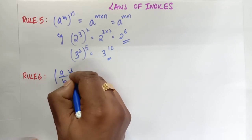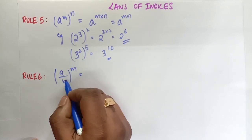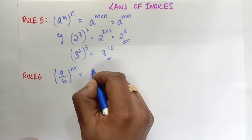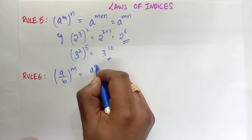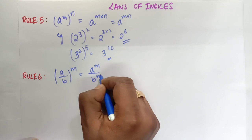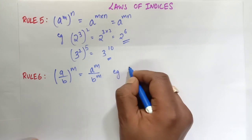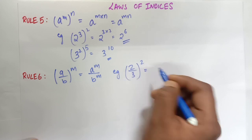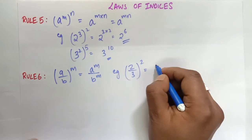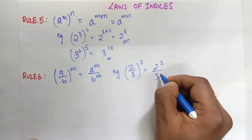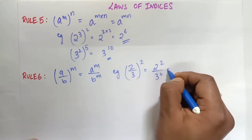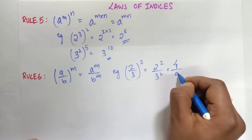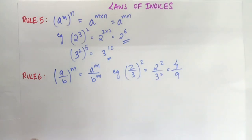Rule number 6: (a over b) to the power m equals a to the power m divided by b to the power m. For example, (2 over 3) squared gives 2 squared over 3 squared, which is 4 over 9.